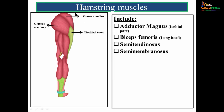Looking at this picture, we see the gluteal region with gluteus medius, gluteus maximus, and the iliotibial tract on the posterolateral aspect, which is the thickened fascia into which the gluteus maximus attaches. The hamstring muscles located in the back of the thigh include four muscles: adductor magnus (specifically the ischial part), biceps femoris long head, semitendinosus, and semimembranosus.